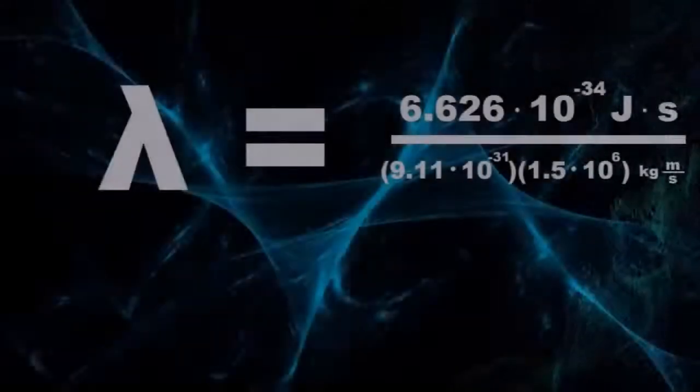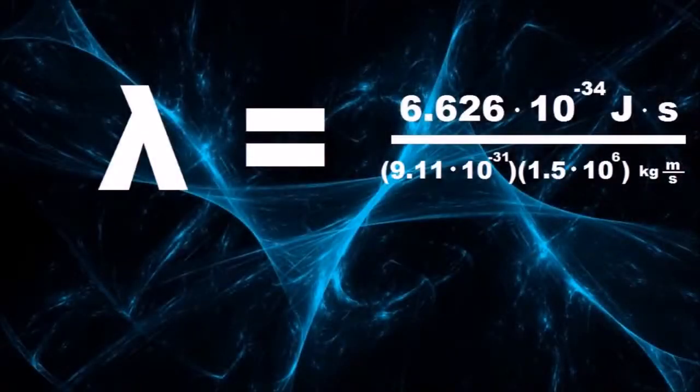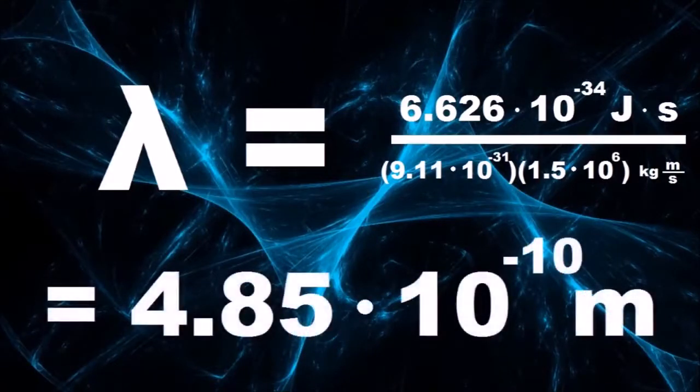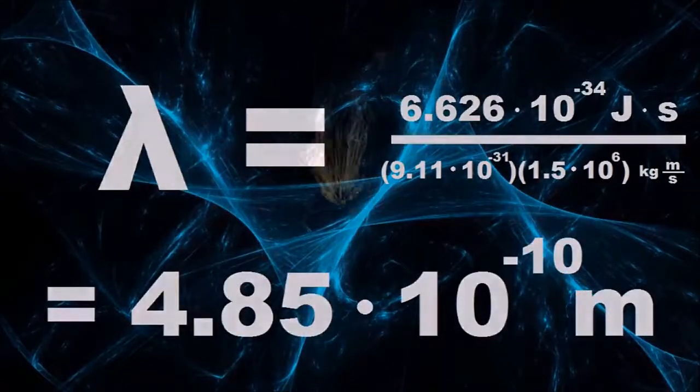An electron, on the other hand, has very noticeable wave effects, and this is because its de Broglie wavelength is actually quite large. Plugging in the mass of an electron moving at 1,500 kilometers per second, the resulting de Broglie wavelength is about the size of a typical atom. As a result, the wave properties of electrons are extremely important at atomic scales.